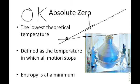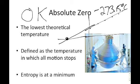Zero degrees Kelvin is absolute zero — the lowest theoretical possible temperature. That's why scientists often use the Kelvin scale, because there are no negative values. Zero Kelvin translates to minus 273.15 degrees Celsius and approximately negative 460 degrees Fahrenheit.